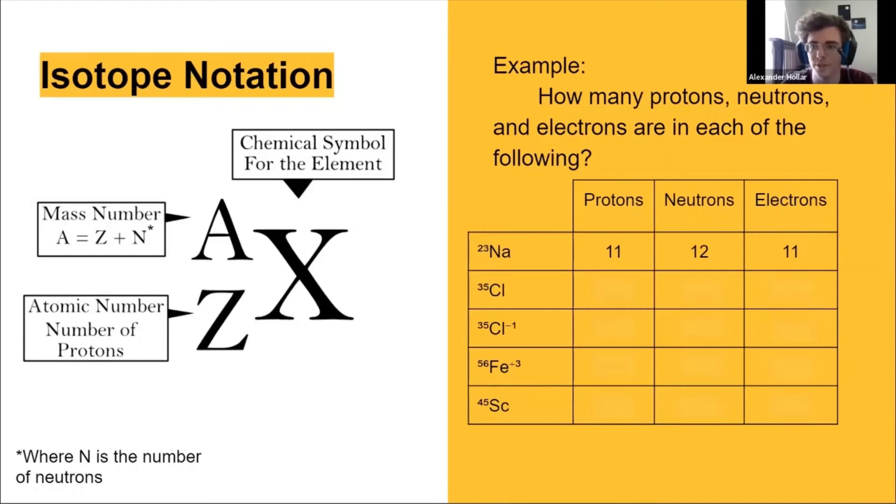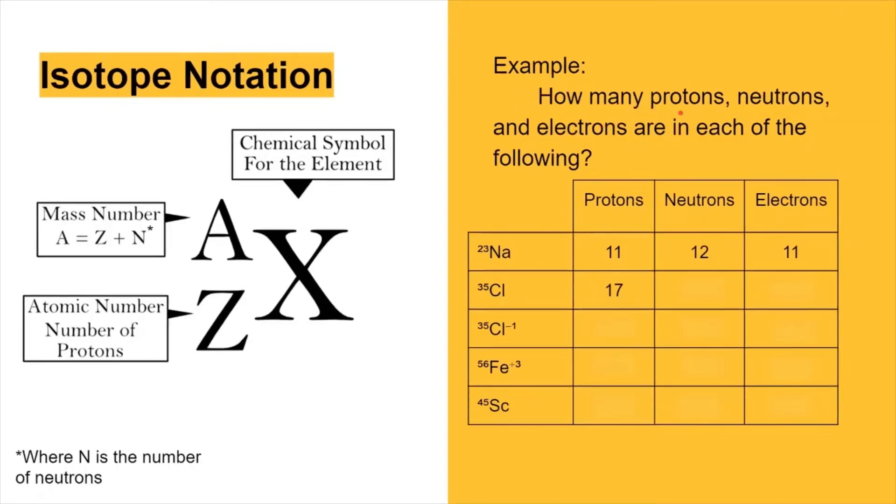Does anybody have the protons, neutrons, and electrons for the chlorine? Would the proton be 17 for chlorine and the neutron be 18, and then electron will be the same as the proton? Yep, so 17, 18, 17.